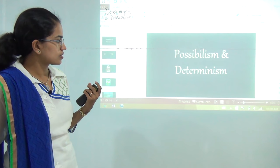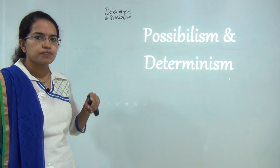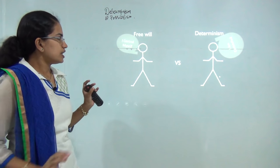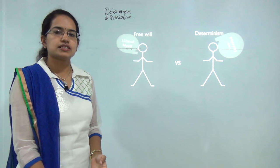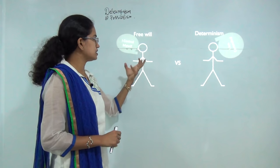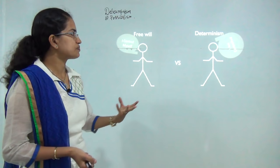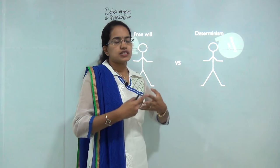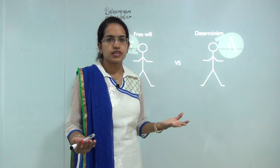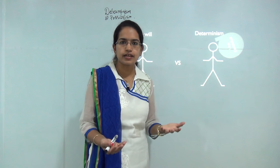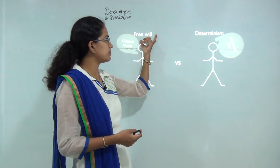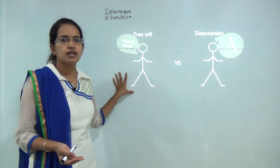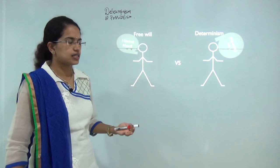Now let's understand what possibilism and determinism are. We have seen how these ideas spread geographically. There are two fundamental options: free will and determinism. Determinism says 'I am controlled,' while free will says 'I control my destiny.' A follower of determinism in a difficult situation will say 'I can't do anything — what nature does with us is what we are destined for.' A person who believes in free will feels they control their destiny and can do something for themselves and their community.